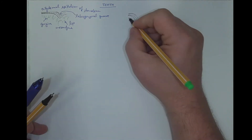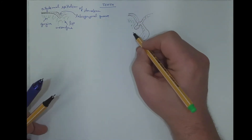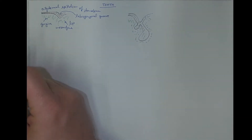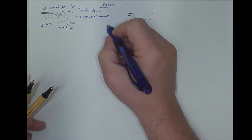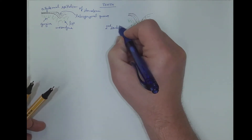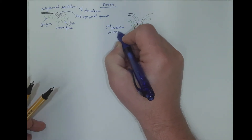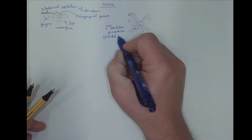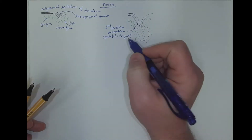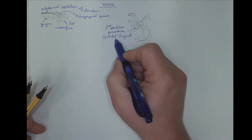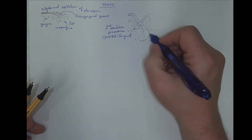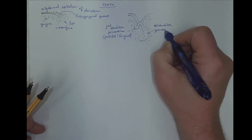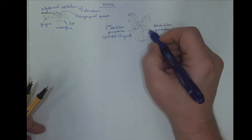This epithelium invaginates into the underlying mesenchyma. The second dentition primordium remains small. It's on the palatal side in the upper jaw and on the lingual side in the lower jaw, relative to the primordium of the first dentition, which is larger. And this structure is called the dental lamina.